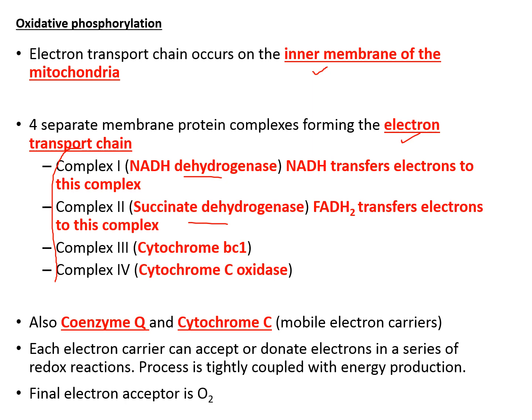Aside from the transmembrane protein complexes, there are smaller mobile electron carriers. The protein complexes are more or less static because they are transmembrane proteins and cannot move around. However, coenzyme Q and cytochrome C are small mobile electron carriers that can move freely in the inner membrane of the mitochondria. They play a similar function: accepting electrons and transporting them to subsequent electron carriers.